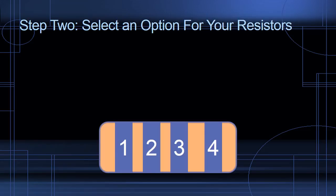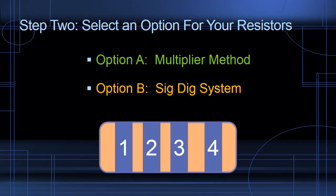Step 2 is select an option for your resistors. We're going to talk about two: option A, the multiplier method, and option B, the SigDig system, and we'll go into detail about each of these.